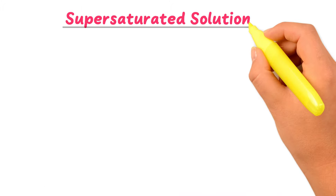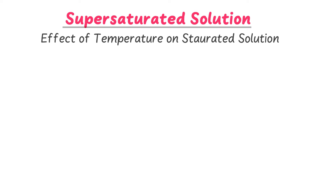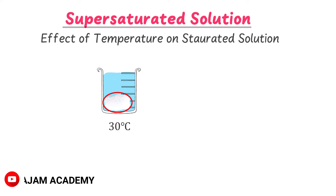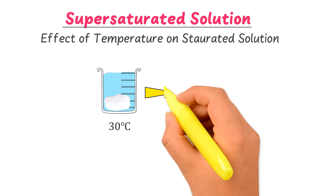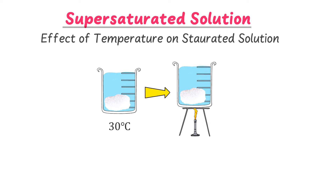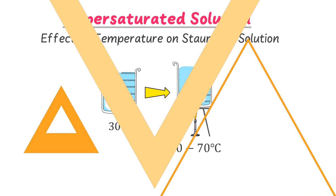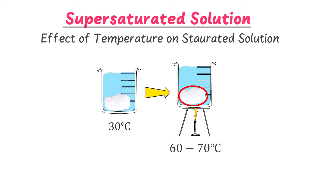What is a supersaturated solution? To learn this concept, you must first understand the effect of temperature on a saturated solution. Consider a saturated solution of sugar and water at 30 degrees centigrade. We can see the undissolved sugar settled at the bottom of this saturated solution.